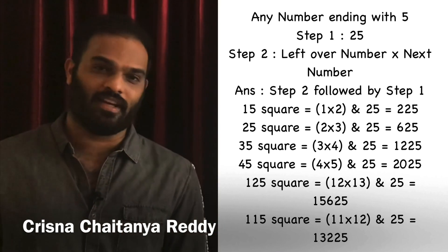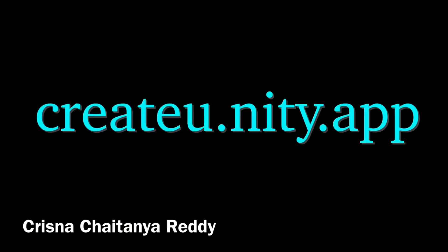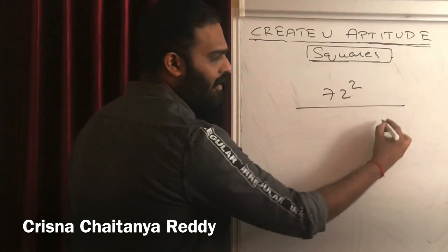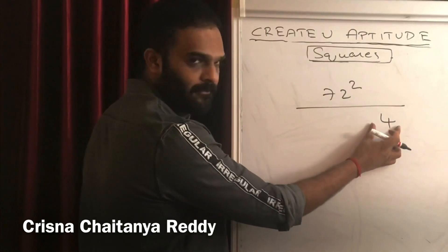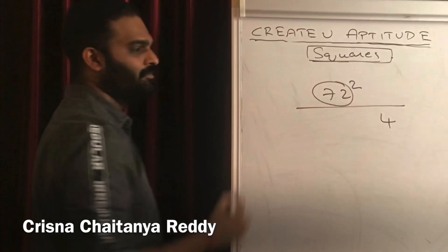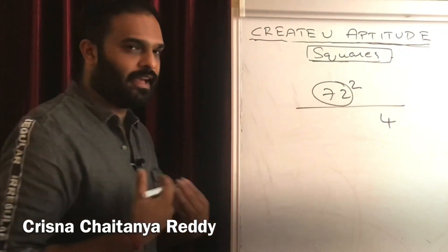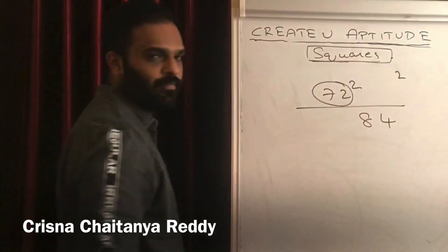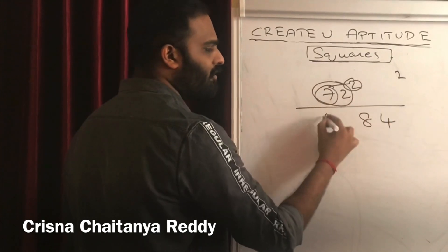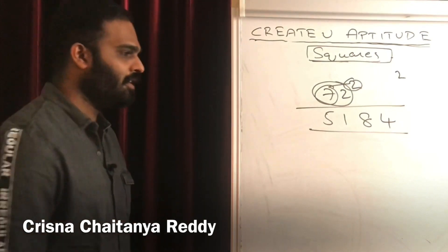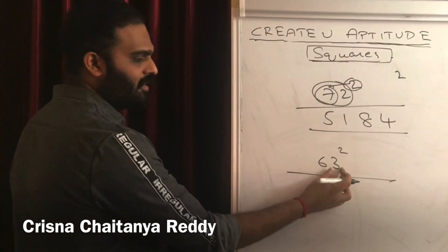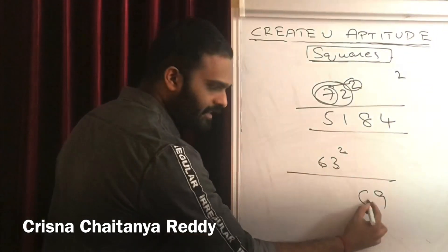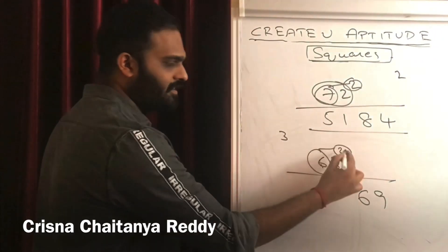Now a method applicable till 250. For 72 squared: write 2 squared = 4 (single digit). Then 7×2×2 = 28 - write 8, carry 2. Then 7 squared = 49, plus 2 carry = 51. Answer: 5184. For 63 squared: 3 squared = 9. Then 6×3×2 = 36 - write 6, carry 3. Then 6 squared = 36, plus 3 carry = 39. Answer: 3969.